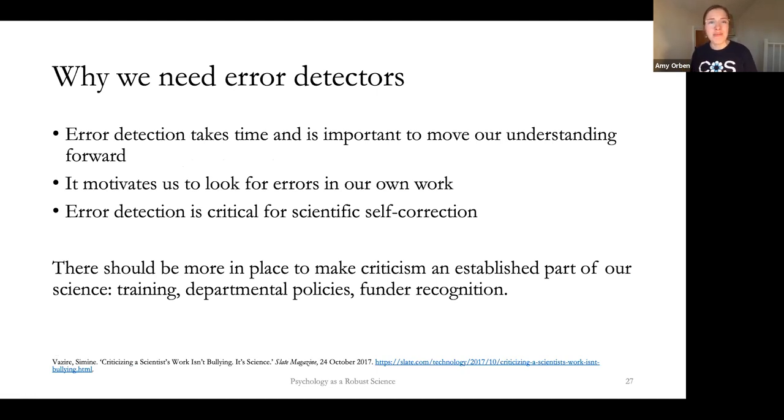Because we really need error detectors. We need to find these errors and we need to rectify them. But error detection takes time. So there's a lot of things that we need to change to enable it. We need to make it more worthwhile that people don't think you're criticizing them. They don't call you a methodological terrorist. But there should probably be more training, funder recognition or departmental policies on really supporting constructive criticism and making it more of an established training in science as well. Do we get trained enough to spot errors and discuss them? I discuss a lot with my undergrads around how a study could be made better. But we don't normally talk about what if there could have been an error in this study.